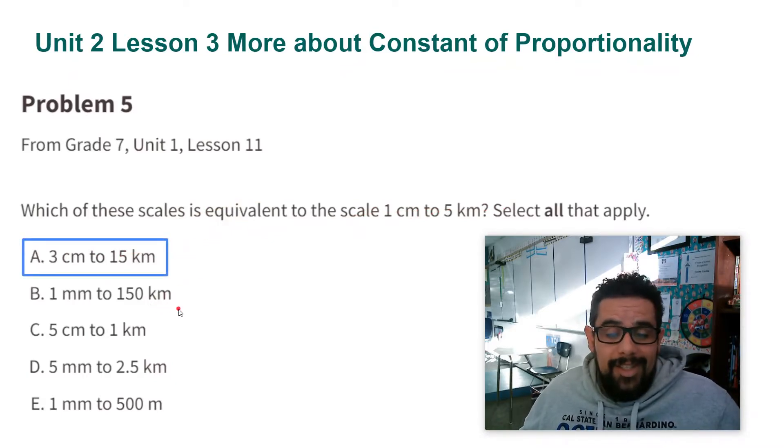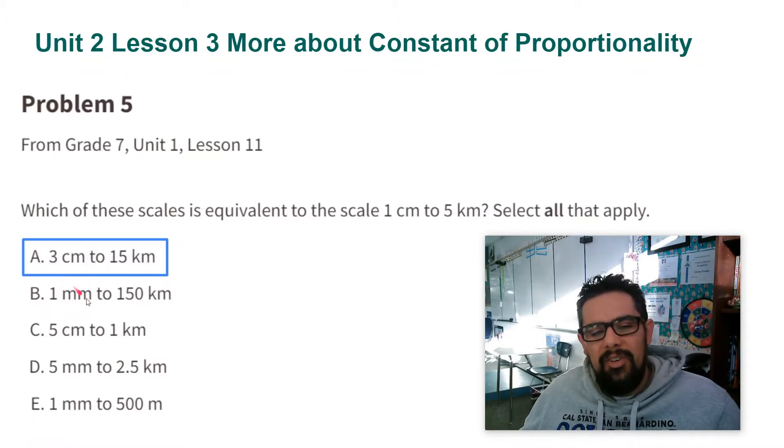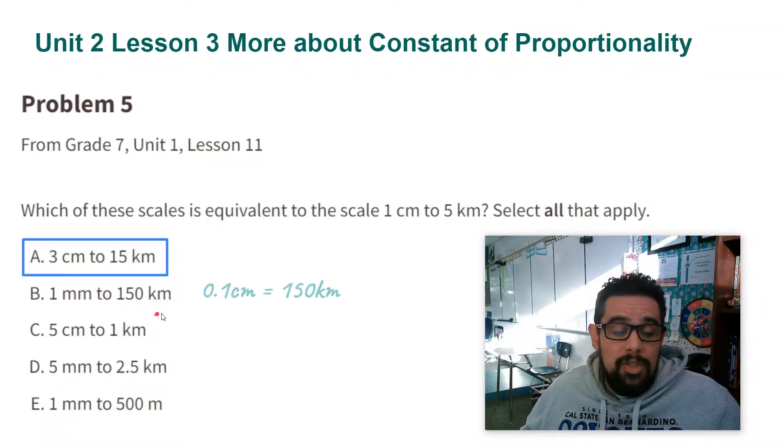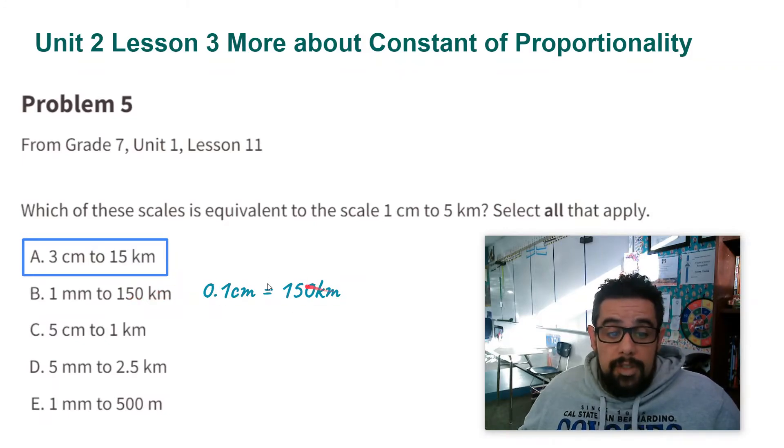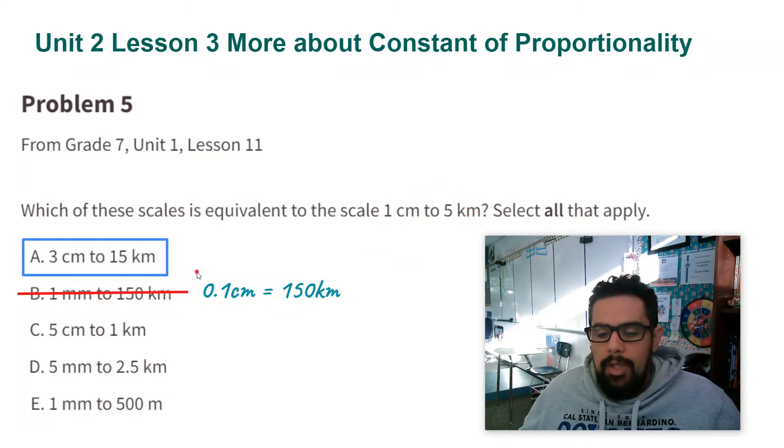On the other ones, it's not going to be as easy. So on part B, I have one millimeter to 150 kilometers. The units are changed, but they can still be the same scale. So what I'm going to do for each one of these is rewrite them so that I'm talking about centimeters and kilometers. So one millimeter is one-tenth of a centimeter. 150 kilometers is 150 kilometers. So this is not equivalent to this. It's not one that works.